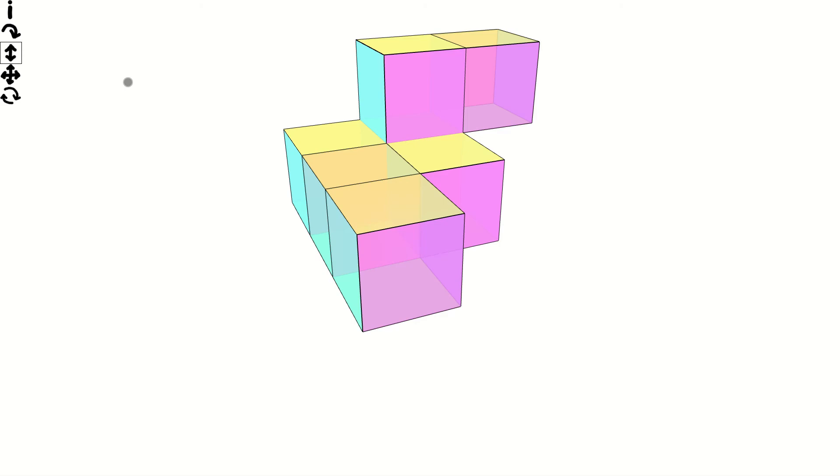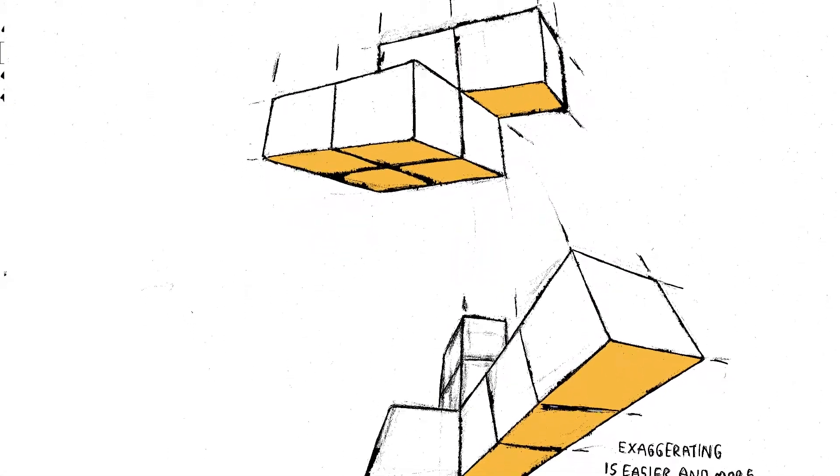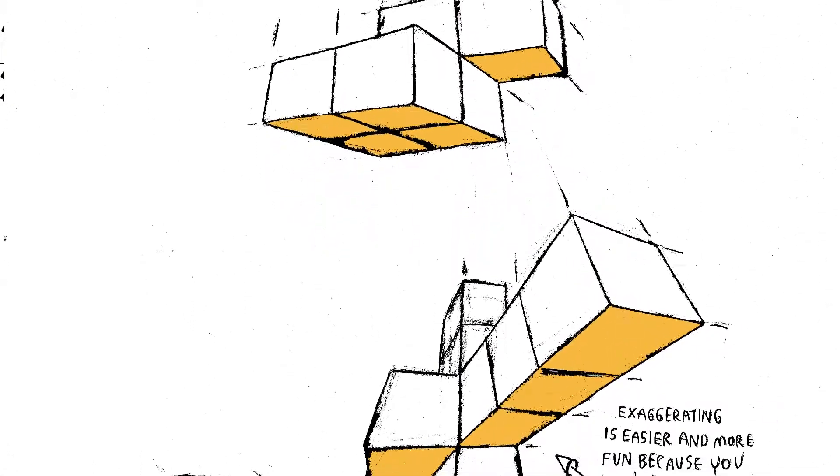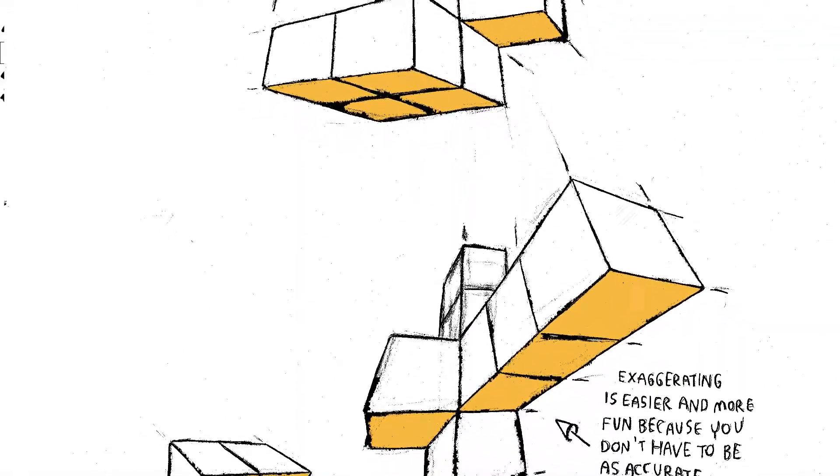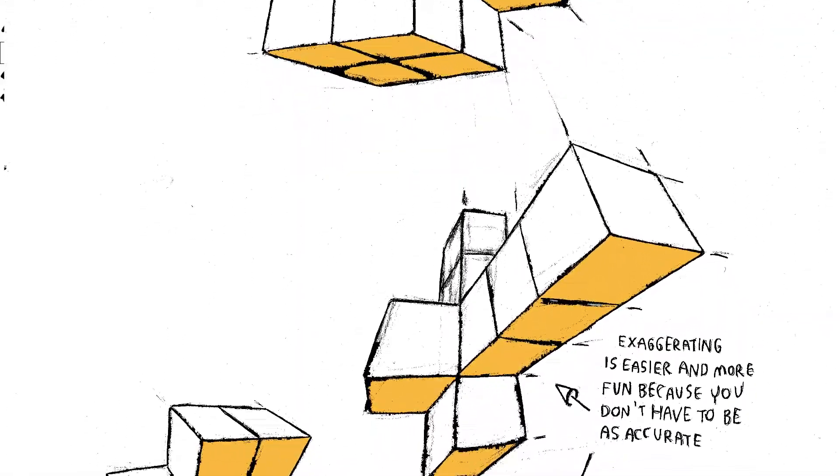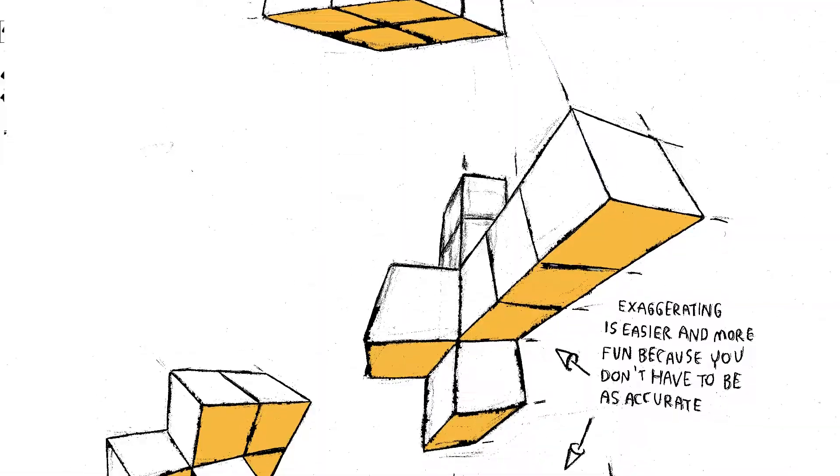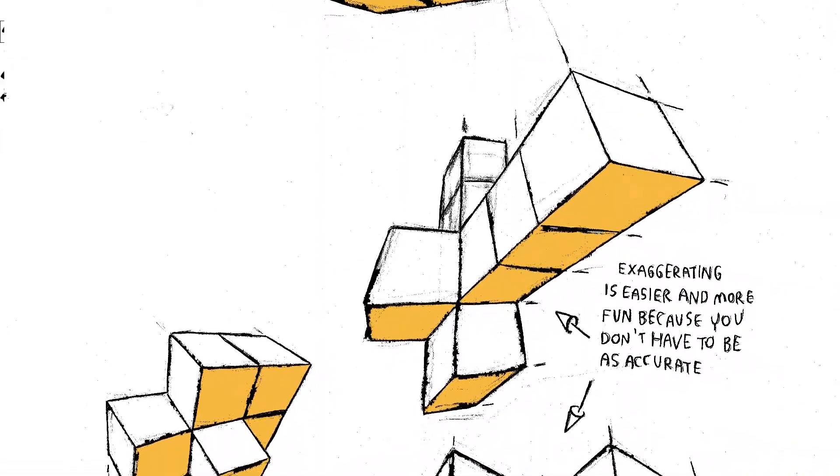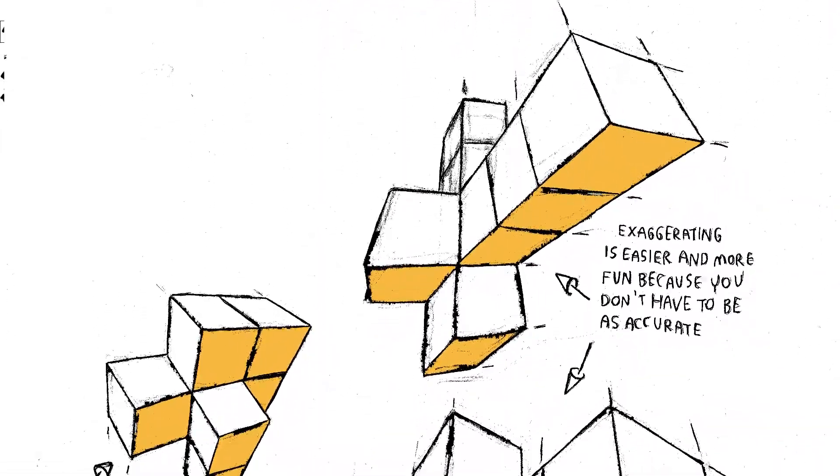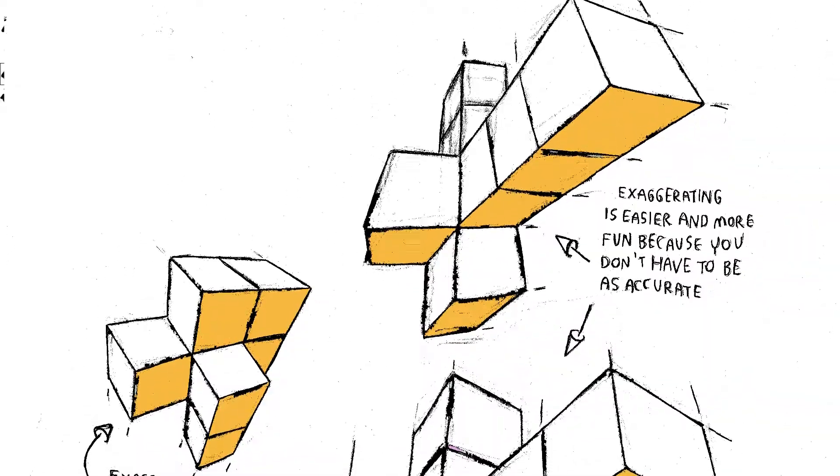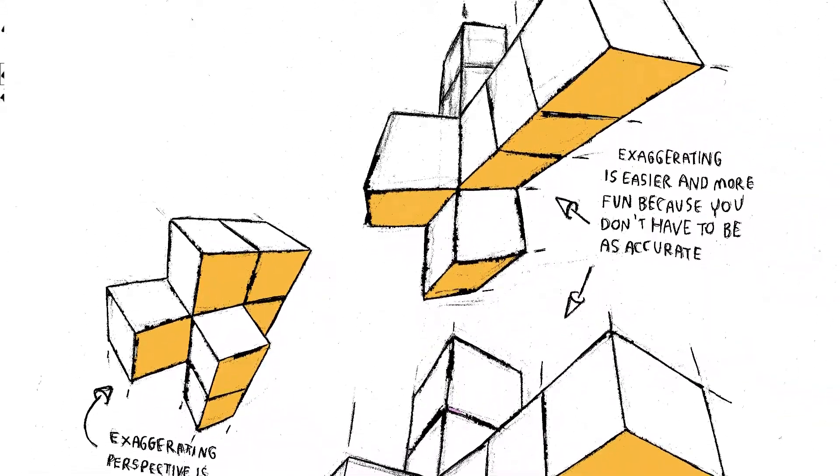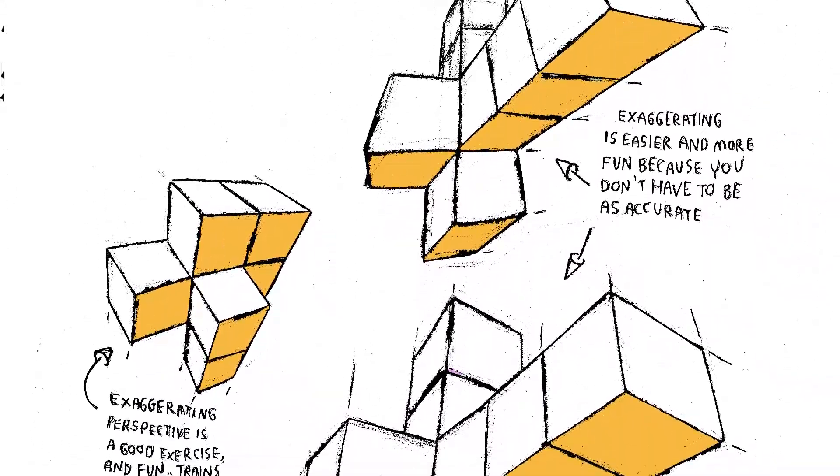It is a good idea to exaggerate the perspective, because it is more fun as accuracy becomes less important. It also forces you to choose vanishing points. Usually vanishing points are far away and the lines running to them are almost parallel, and small mistakes in the angles of the lines can cause them to converge to a point in the wrong direction. And it just looks off.